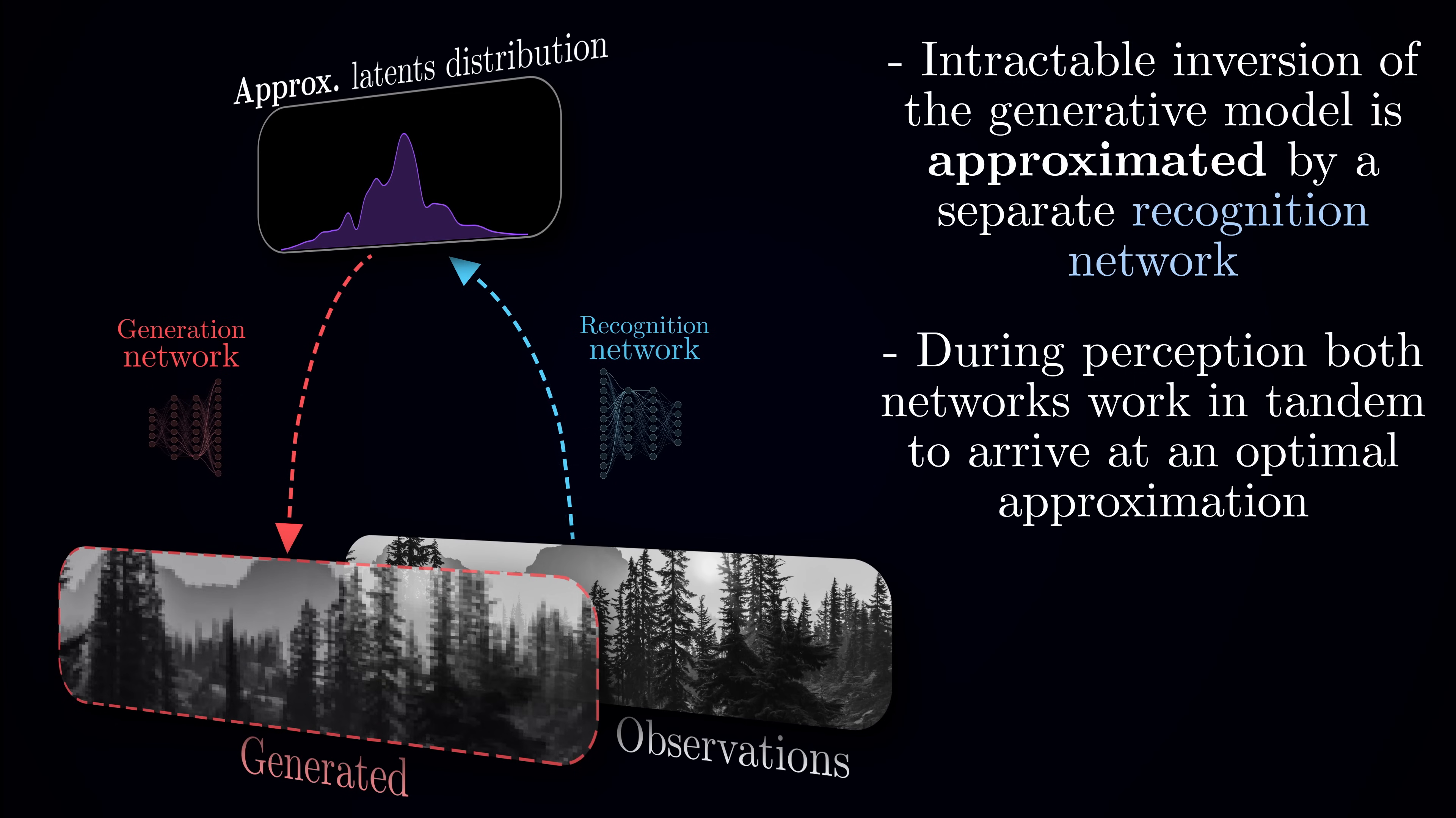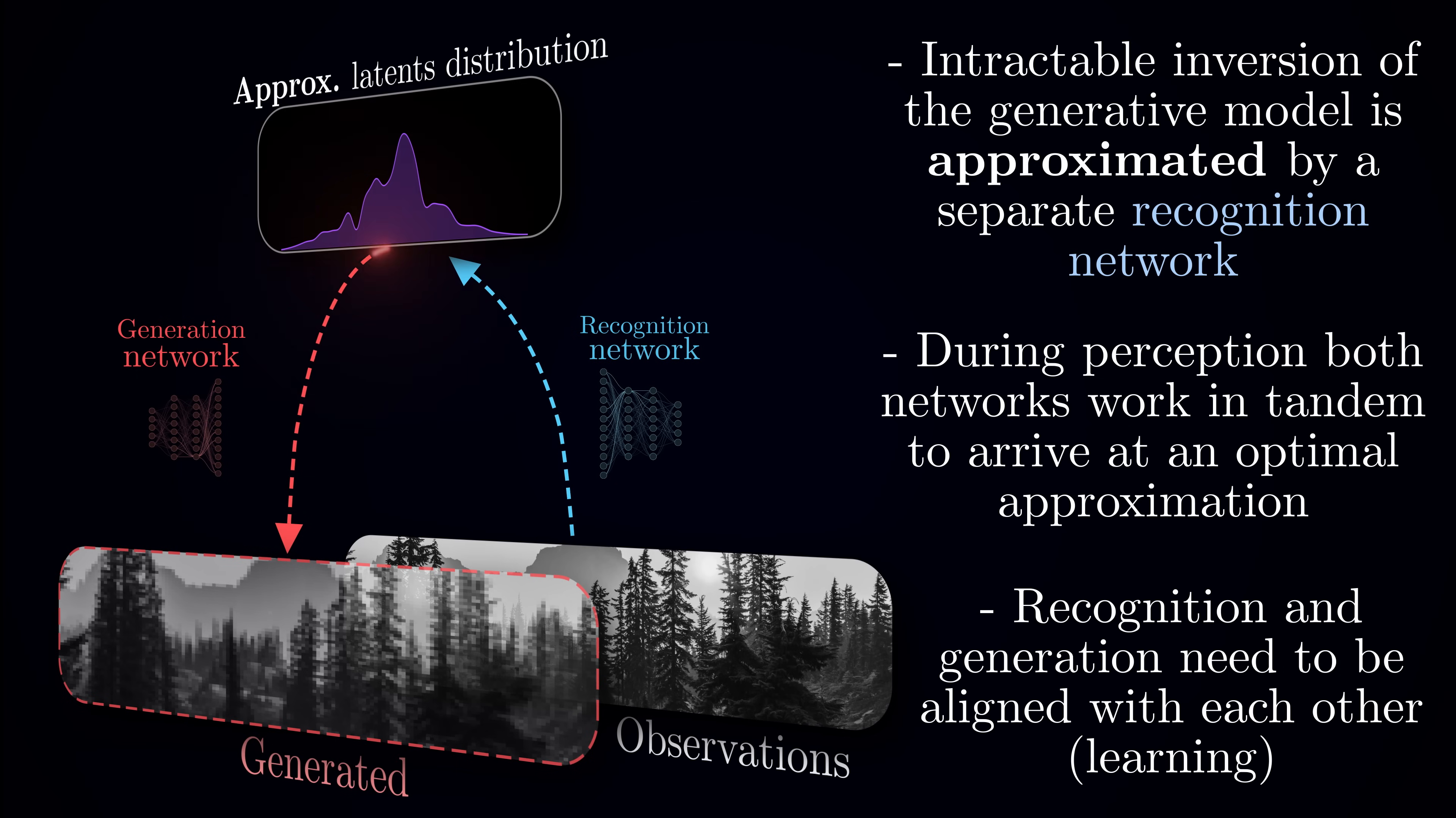Crucially, for this system to work, the recognition and generative networks need to be aligned with each other. They need to speak the same language of causes. When the recognition network suggests a particular pattern of latent neuron activity as an explanation, the generative network should produce sensory patterns that match what the recognition network has learned to associate with those causes. This alignment isn't automatic. It needs to be learned through experience.